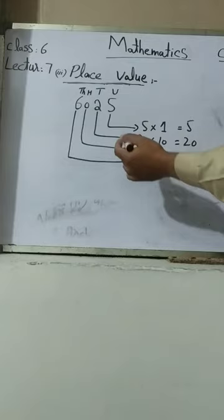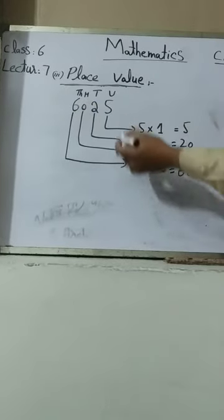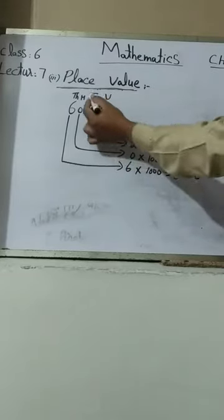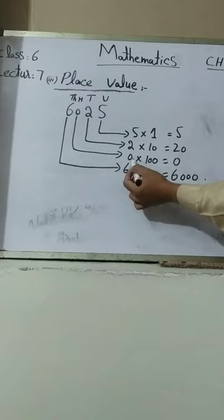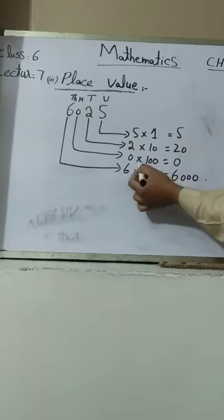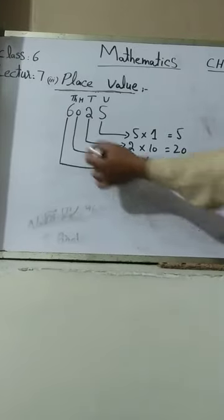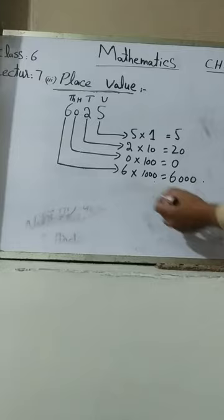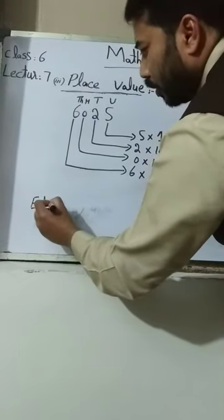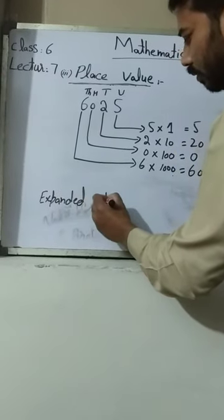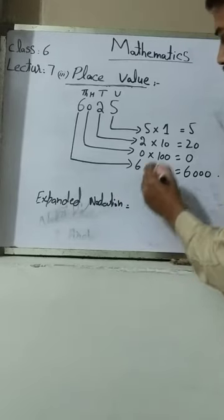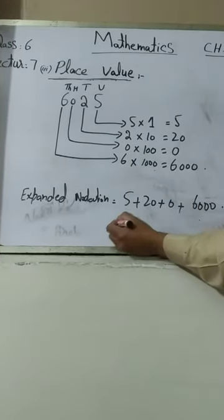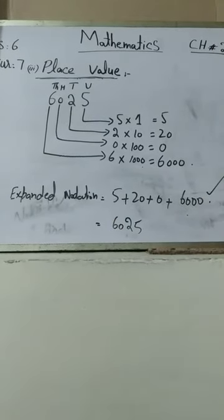Now let us take another example: 6,025. The places are unit, 10, 100, and 1000. Digit 5 is in the unit place, so 5 multiplied by 1 equals 5. Digit 2 is in the tens place, so 2 multiplied by 10 equals 20. Digit 0 is in the hundreds place, so 0 multiplied by 100 equals 0. Digit 6 is in the thousands place, so 6 multiplied by 1000 equals 6,000. In expanded notation: 5 plus 20 plus 0 plus 6,000, giving the answer 6,025.